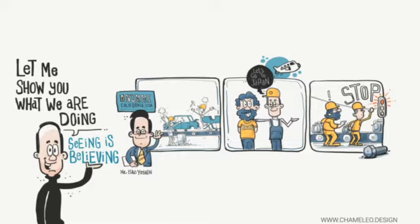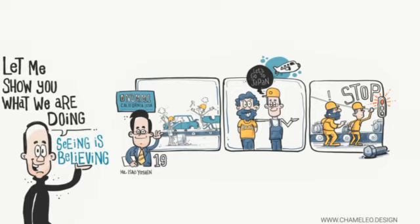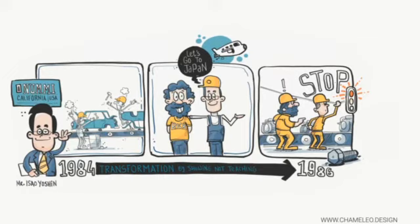And so in that short period of time from 1984 to 1986, the GM plant that Toyota took over with the same workers went from the worst plant in all of GM worldwide to number one. Mind-boggling accomplishment with the same team members.